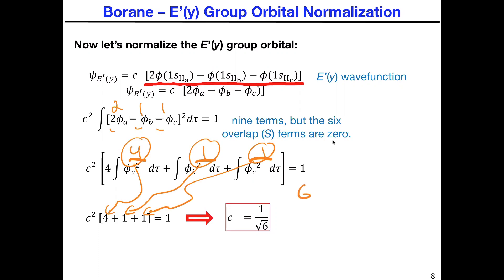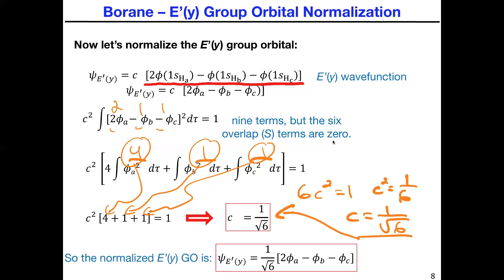As a result, you get 6C² = 1. Solving for that, C ends up being 1 over the square root of 6, which is what is here. That's the normalization constant for the E'(y) group orbital.